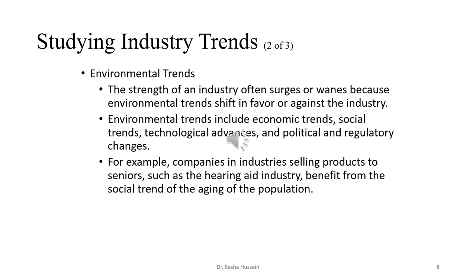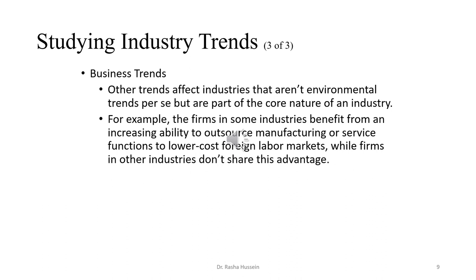In contrast, industries selling food products high in sugar — like candies, chocolates, and soft drinks — suffer as people become more health conscious and weight conscious. Business trends are other trends that affect industries but are not environmental. For example, firms in some industries benefit from an increasing ability to outsource manufacturing to lower-cost foreign labor markets, like manufacturing in China due to low labor costs, while firms in other industries cannot do the same.